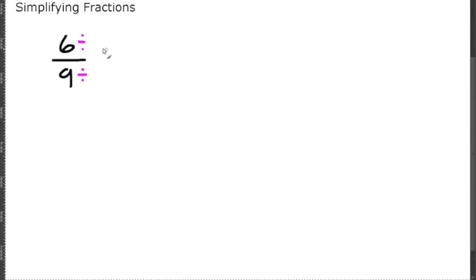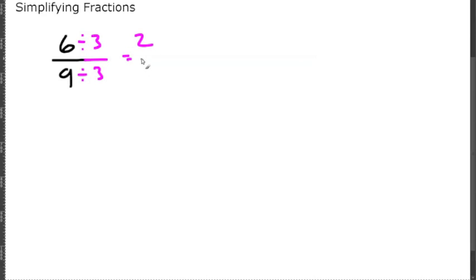So three is going to be our largest possible number that we're dividing by. And that's the trick — you want to divide by the largest possible number for both of them. So, six divided by three is going to be two, and nine divided by three is going to be three. So, six-ninths equals two-thirds.